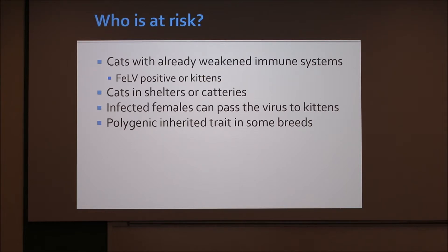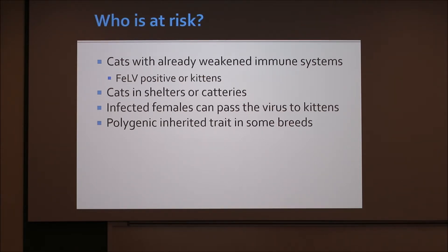Who is at risk for FIP? Cats with already weakened immune systems, such as those that are FeLV-positive or kittens. Cats in shelters or catteries are also at risk because they're in such high-density populations that this virus can spread pretty rapidly. The most common way this is spread is through infected females passing it to their kittens. It's also a polygenic inherited trait in some breeds like Bengals, Ragdolls, and breeds like that.